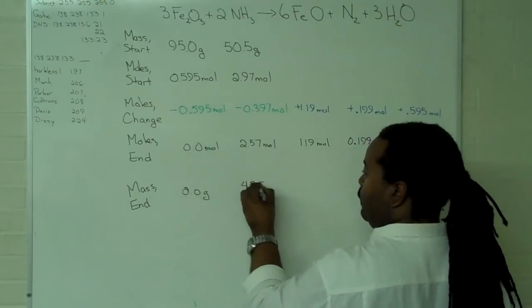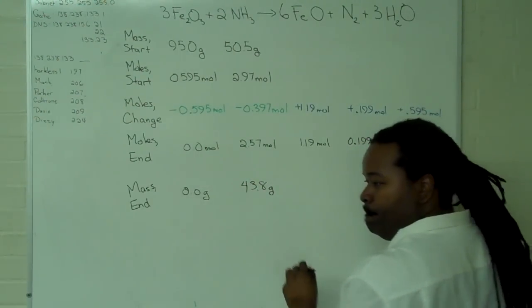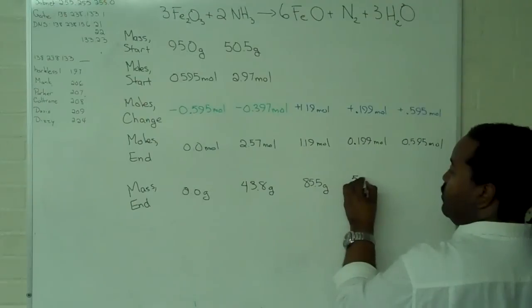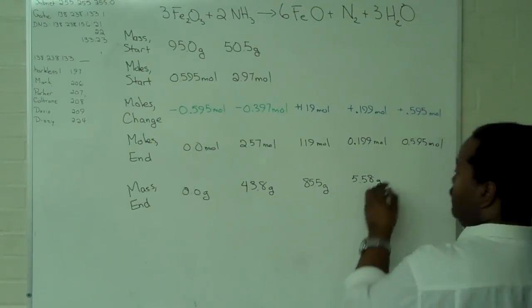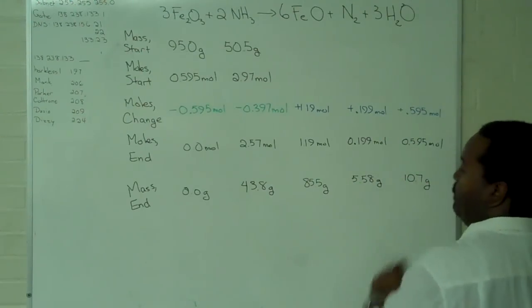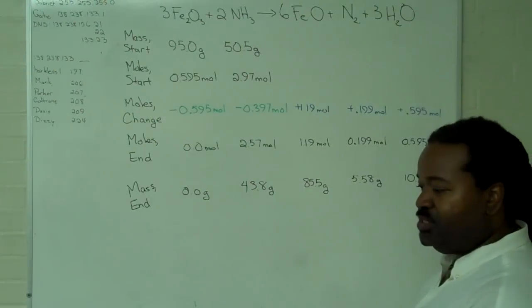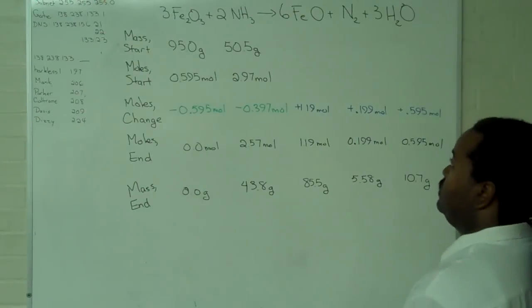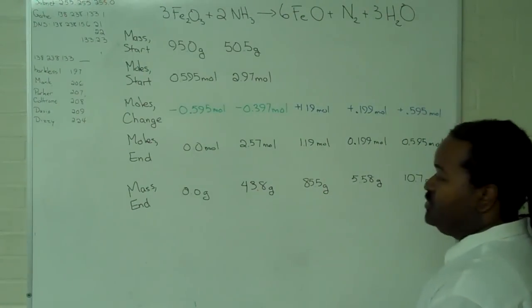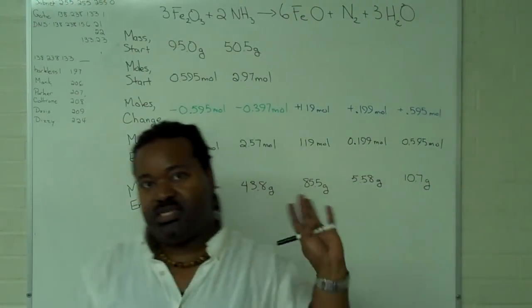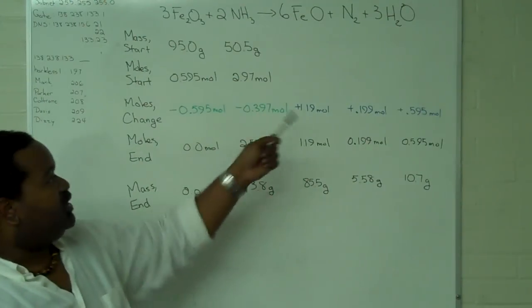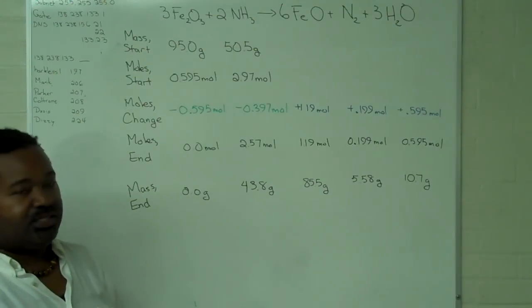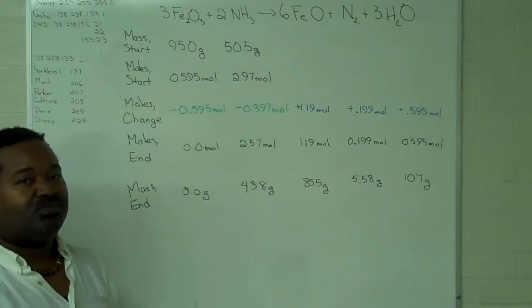If we take all of these quantities and add them up, what we should see is that we have a value very close to the initial masses. But this entire procedure, the linchpin is determining that change in moles using the mole ratio properly. Verifying that this was done correctly is left as an exercise to you, the viewer.